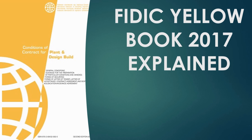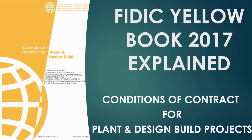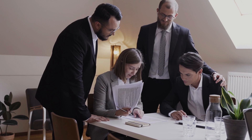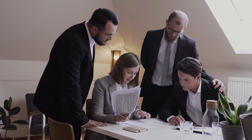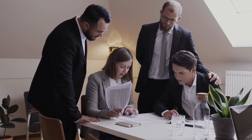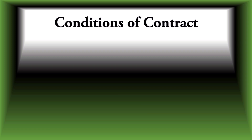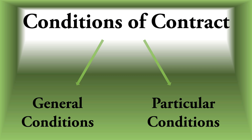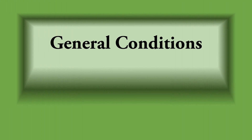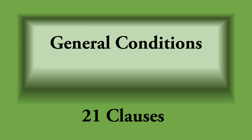This book consists of conditions of contract for plant and design-build projects. As a construction professional, it is really important to have a sound understanding of FIDIC clauses. There are two types of conditions: general conditions and particular conditions. The FIDIC Yellow Book 2017 consists of 21 clauses, and I'm hoping to explain everything in this document in a series of videos.